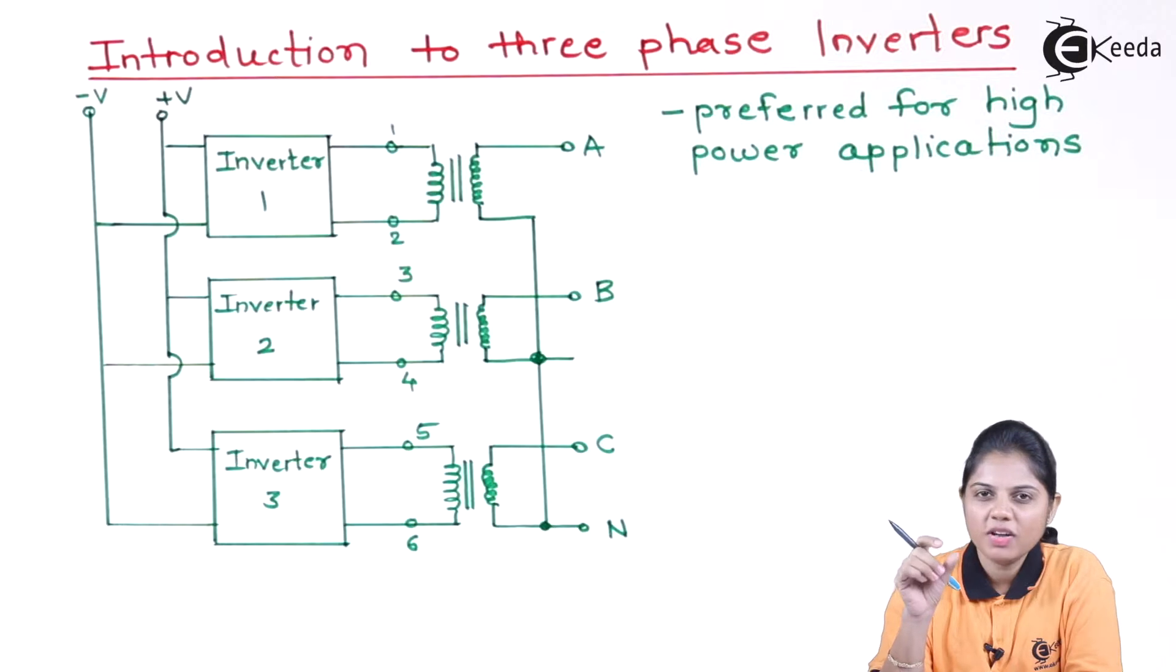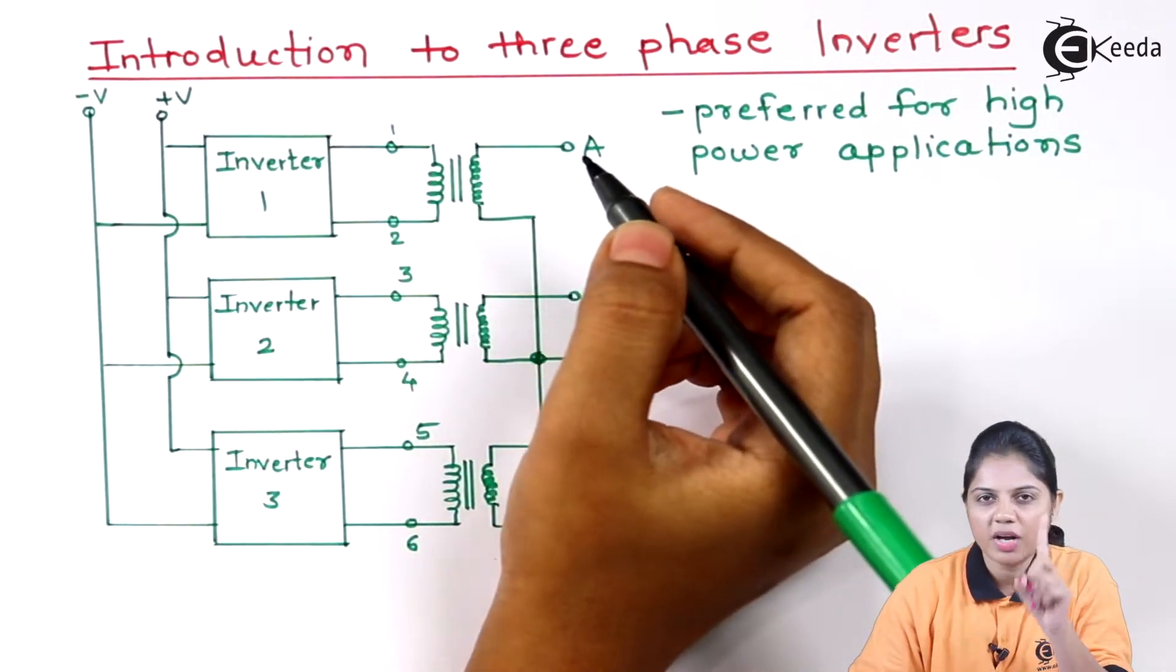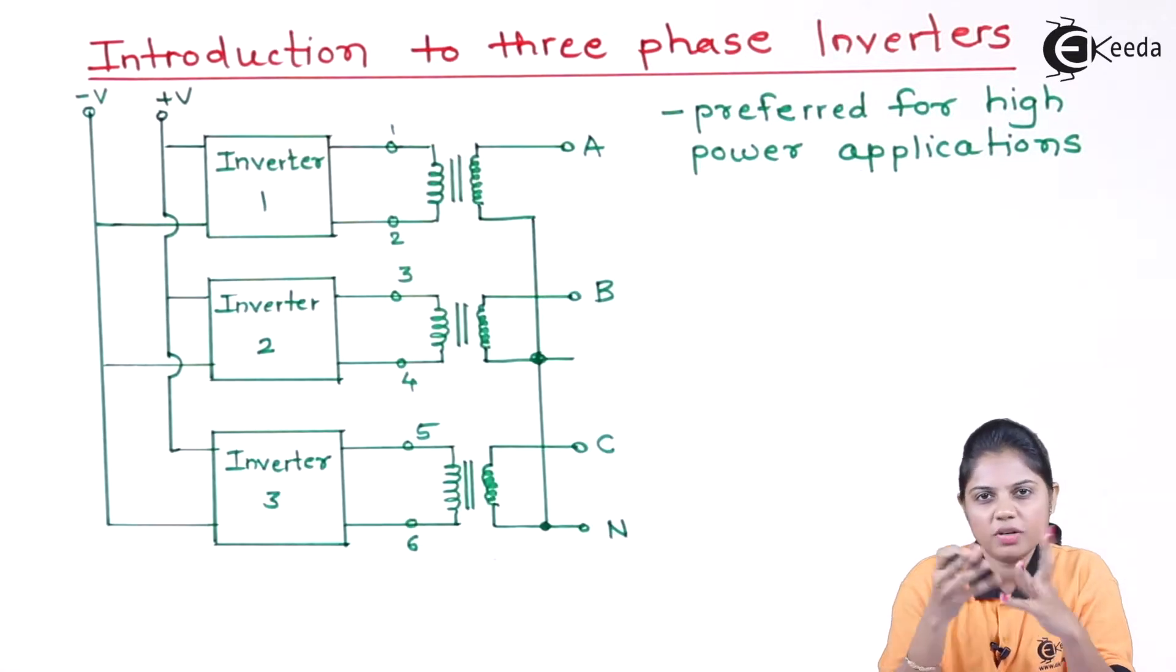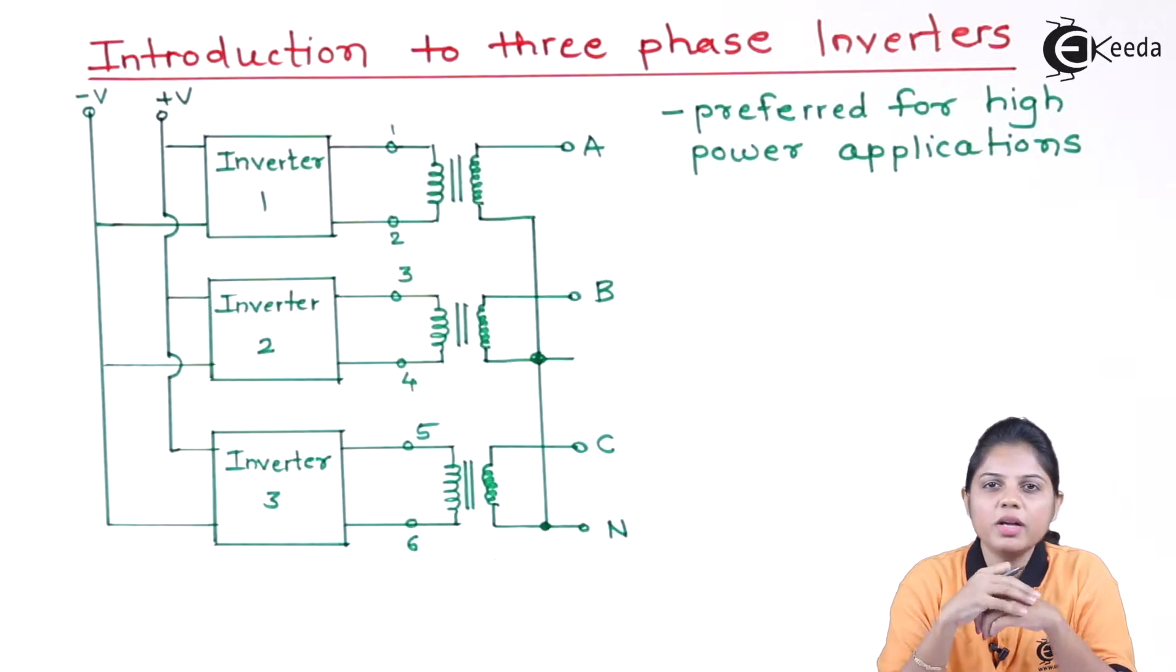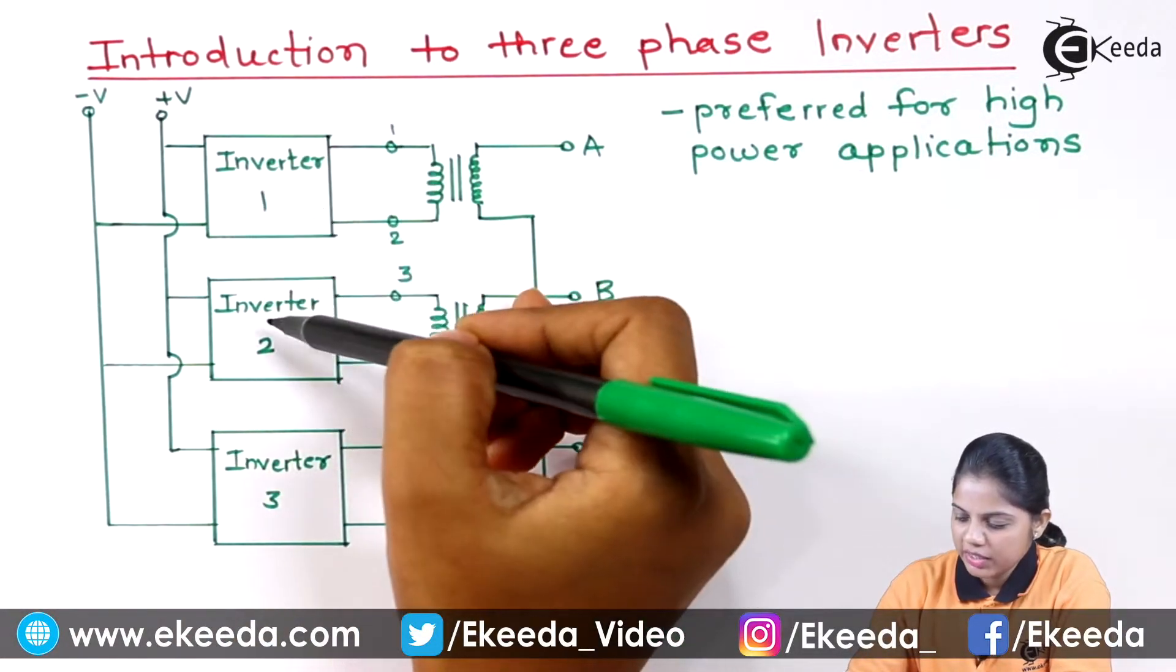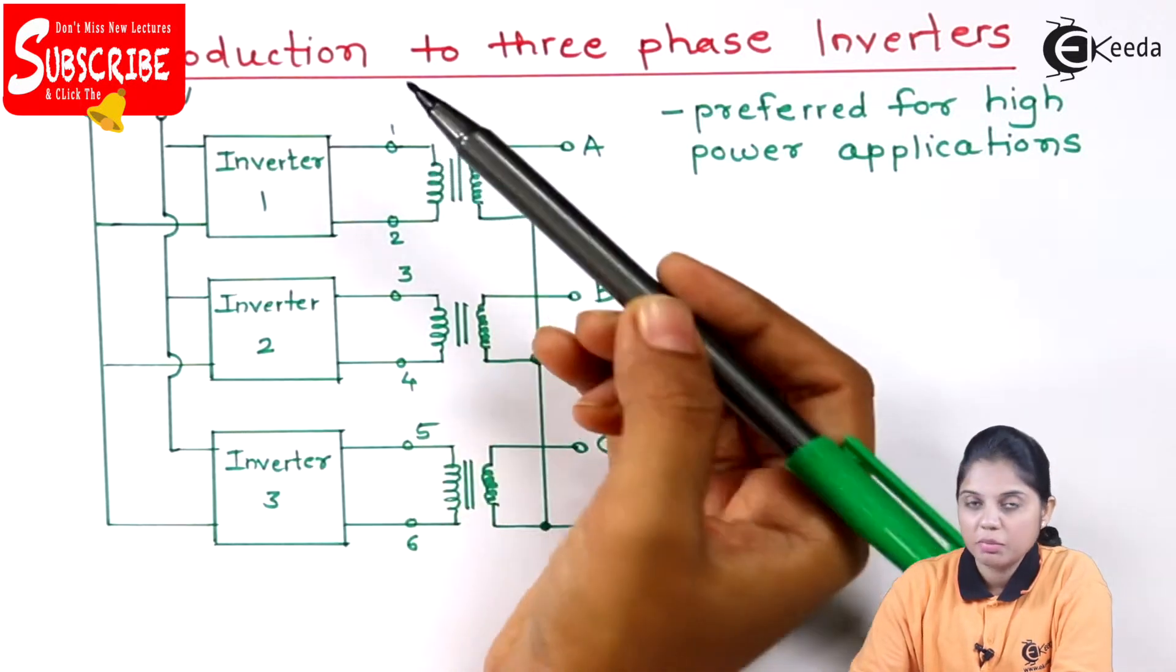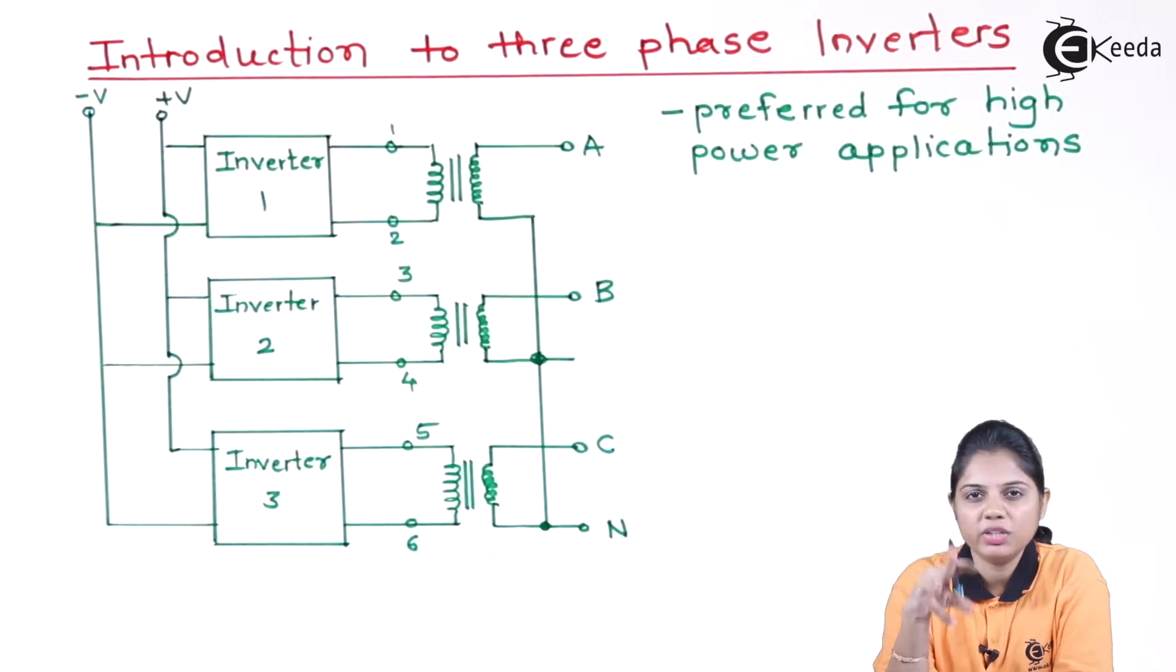Previously what we studied is single-phase, so there was only one phase connected, only one transformer connected. Either you can go for a transformer or not. And the DC voltage is directly connected to the pair of SCRs and diode. But here we are using three different inverters and their terminals are connected in such a way that it will get connected to three different types of load.